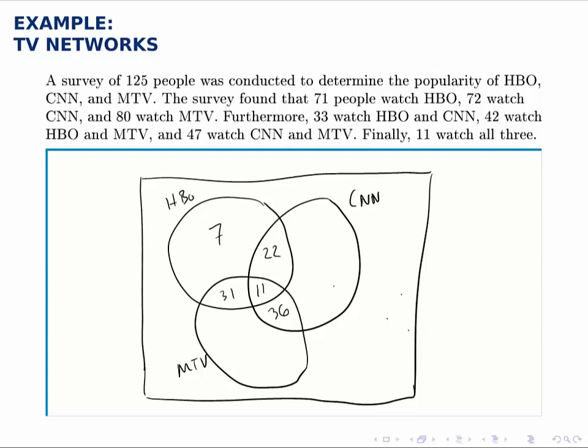Now let's do the same for the other two. For CNN, we know there's a total of 72. But we've already added up 22 plus 11 which is 33 plus 36 gives us 69. So if there's a total of 72 in CNN and we've already counted 69 of them, that leaves 3 on the outside.